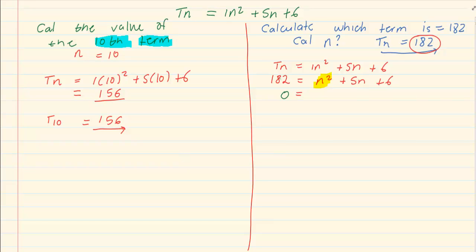I am going to take over the 182. So I have got n squared plus 5n plus 6 minus 182, giving us n squared plus 5n minus 176. If you have to factorize, you have got n plus 16 and n minus 11 is equal to 0.